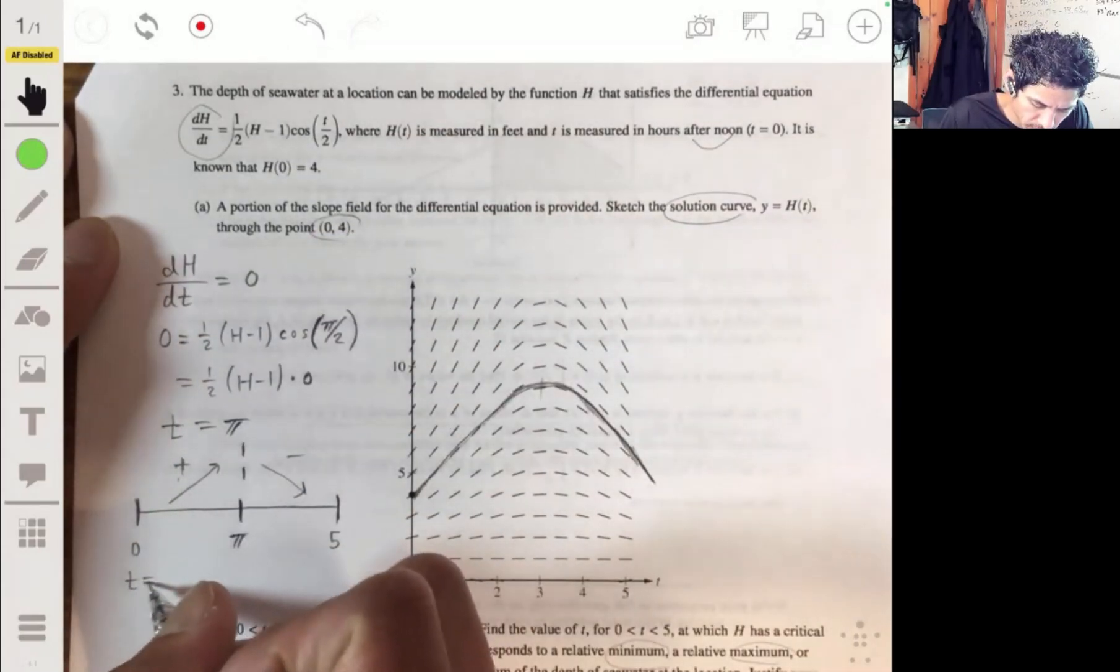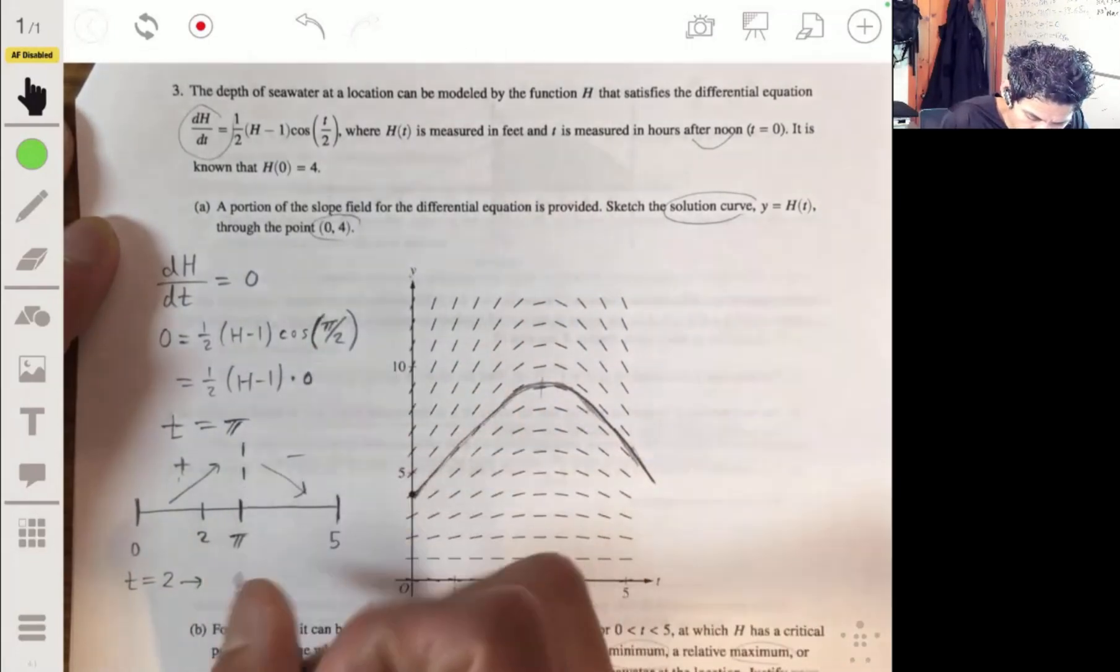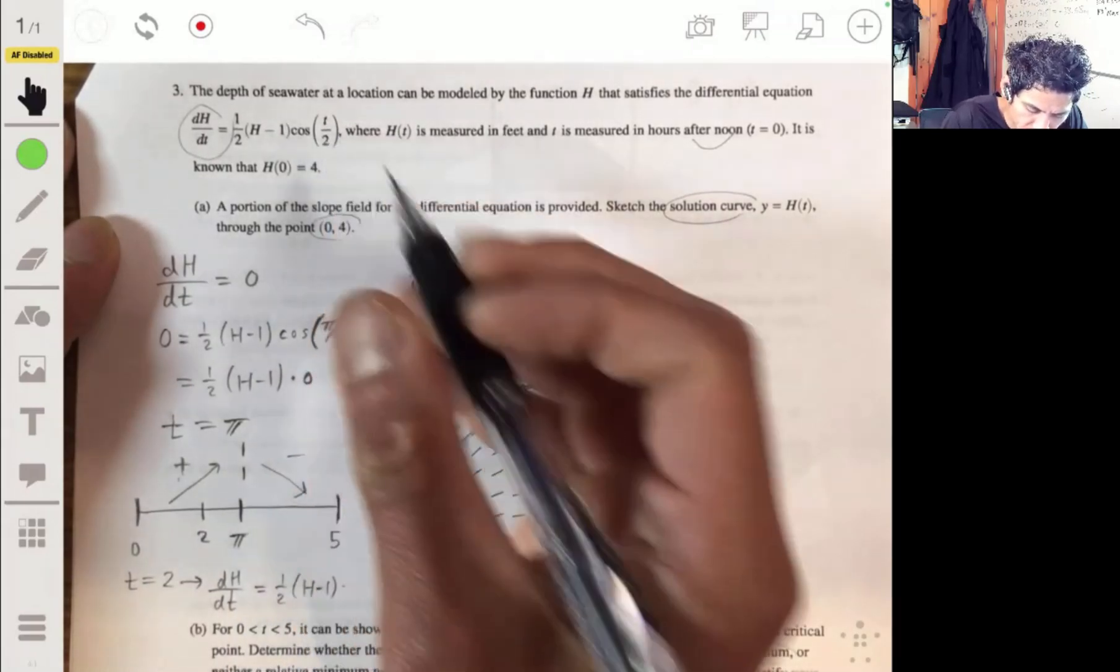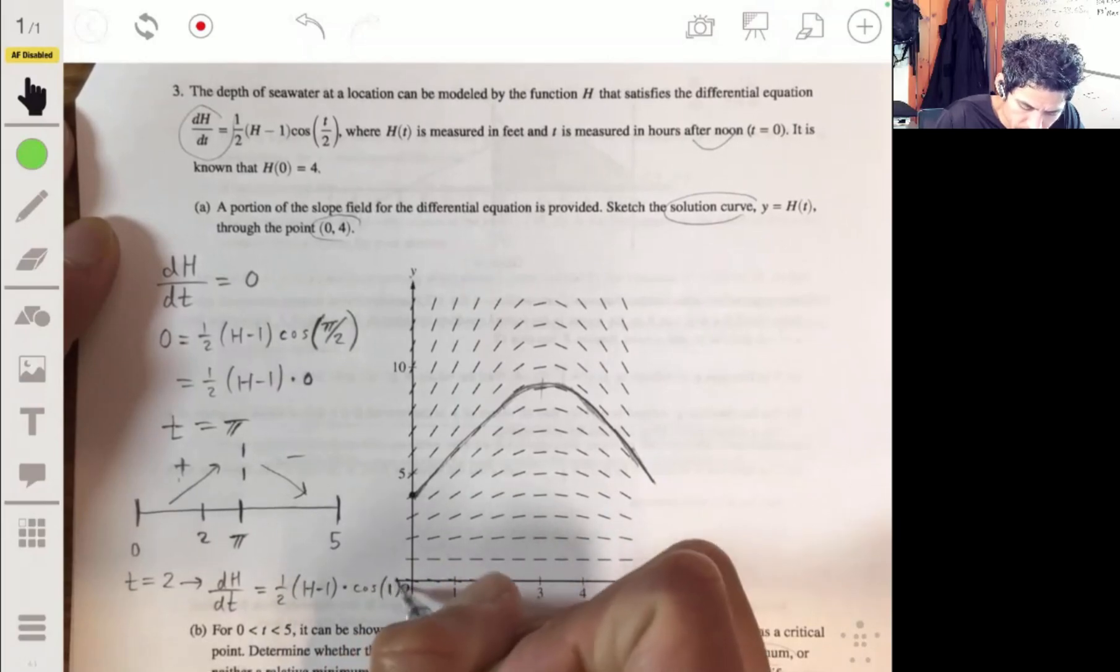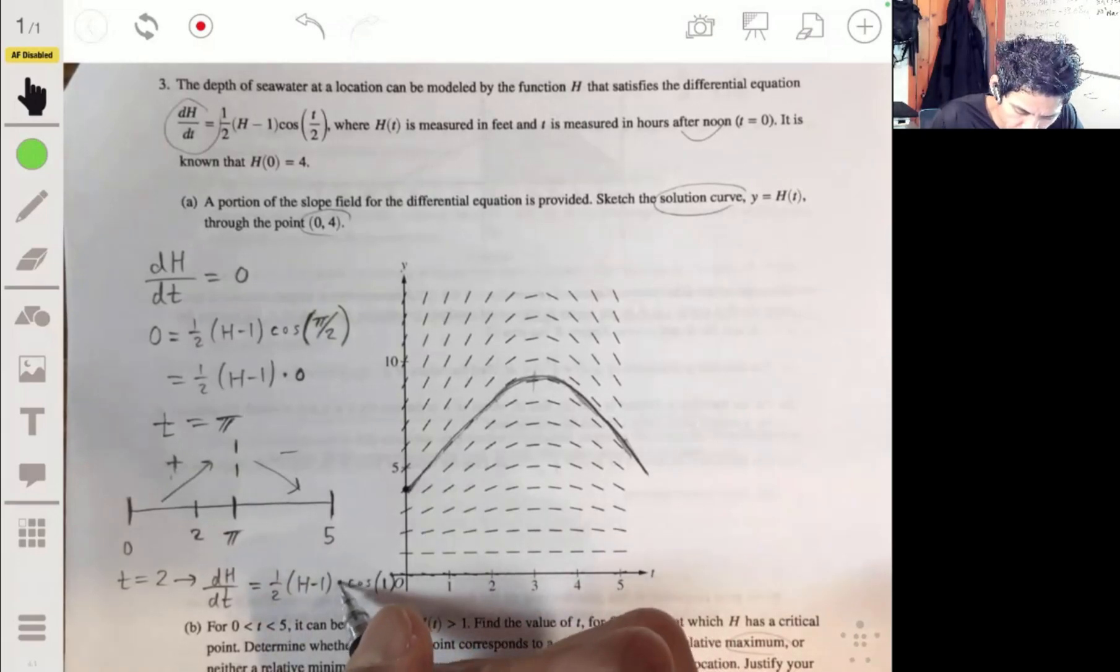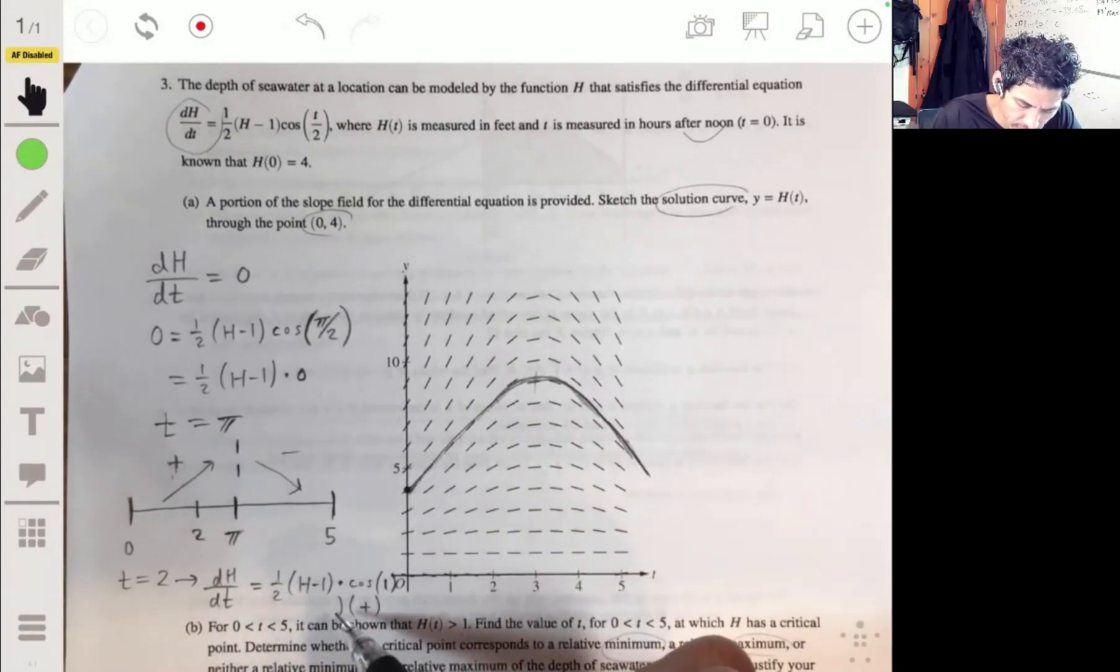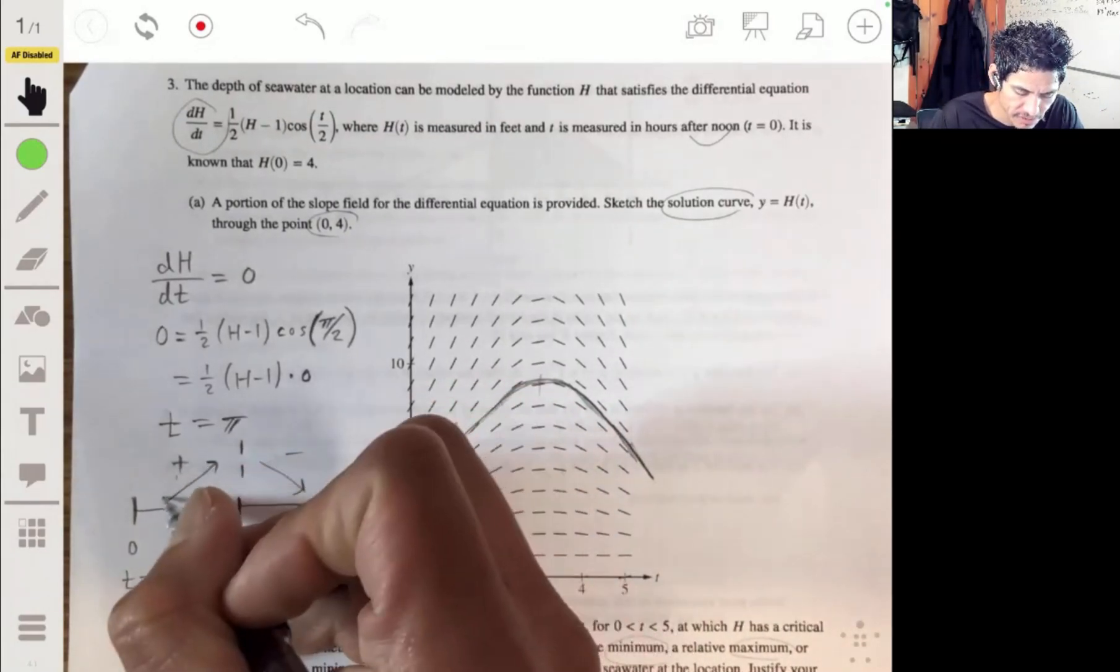If I pick T is two, so like two would maybe be like right here, plug two into there, I would get that dH dt is one half times H minus one times the cosine of two over two or times the cosine of one. And then we know that we don't know what the exact value of the cosine of one is, but we know it's going to be positive because we know it's in the first quadrant. So we know this is a positive number and this we're told that H is going to be more than one. So then we know that this is a positive number. So we have a positive times a positive. And so then again, that shows that before pi, the derivative is positive. So it's increasing.